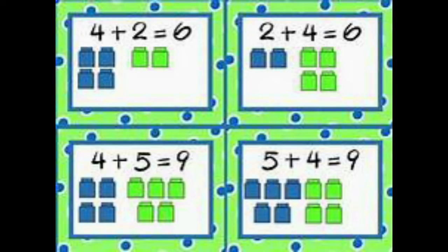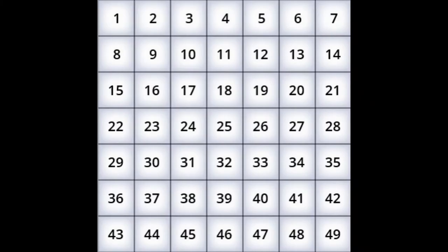Number five, difficulty mastering number sense or calculation — they don't quite understand what numbers are or the relationship they have with one another. And then number six is difficulty with mathematical reasoning — trouble applying mathematical concepts together or just basic mathematical facts or procedures.